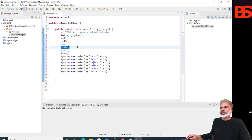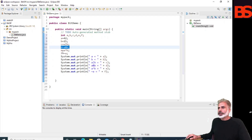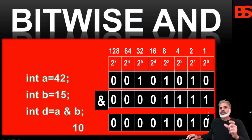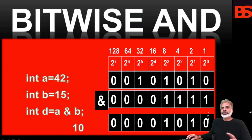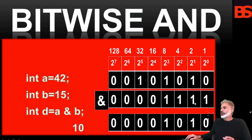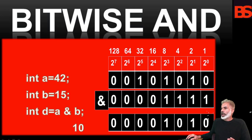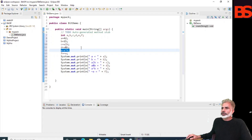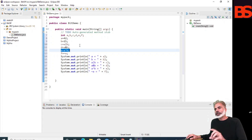In this statement we are applying the bitwise AND operator. The bitwise AND operator produces a 1 bit only if both operands are 1; otherwise the result is 0. So 0&1 = 0, 1&1 = 1, and all others are 0.